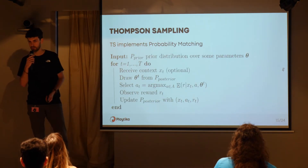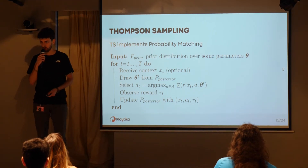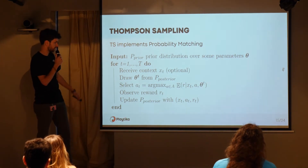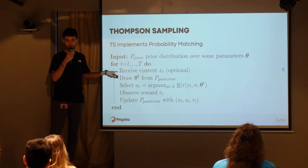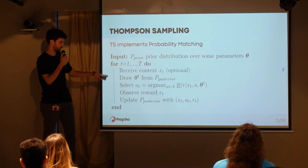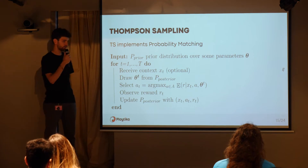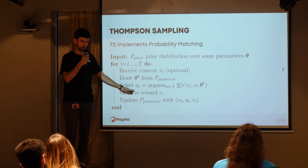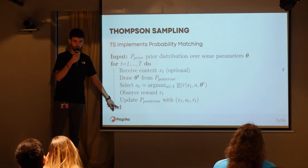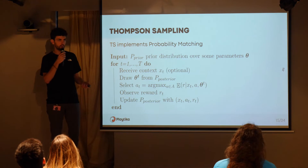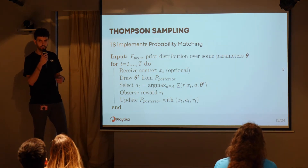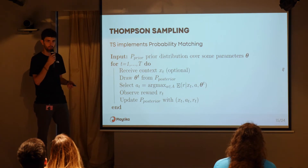Thompson sampling implements optimism under uncertainty via probability matching. You maintain a prior distribution over a parameter vector theta. At each timestep you receive a context, sample the parameter vector from the posterior distribution, take the action that maximizes the expected reward, observe the actual reward from the environment, and update the posterior distribution with the new data. The most difficult part is updating the posterior. In our case for the contextual bandit, we solve it via Markov chain Monte Carlo simulation.